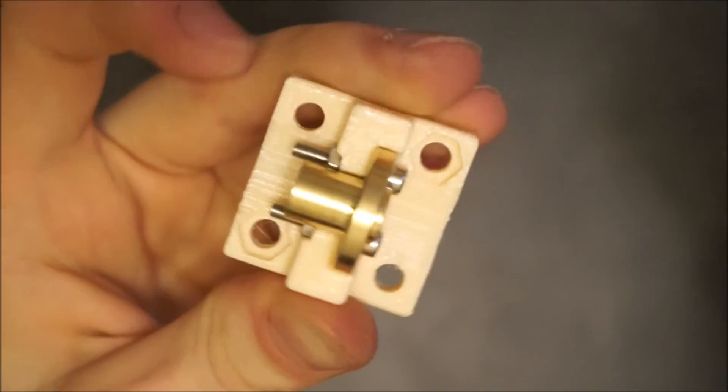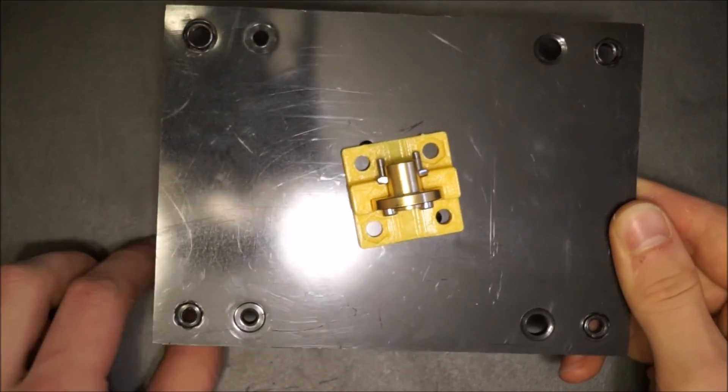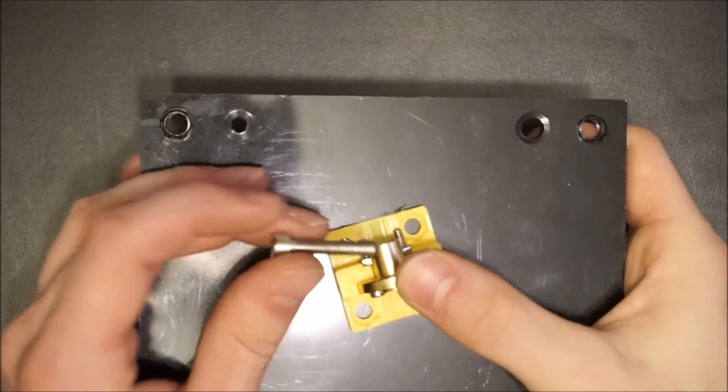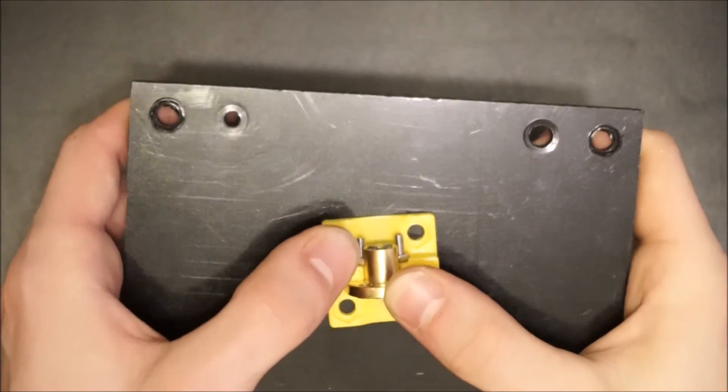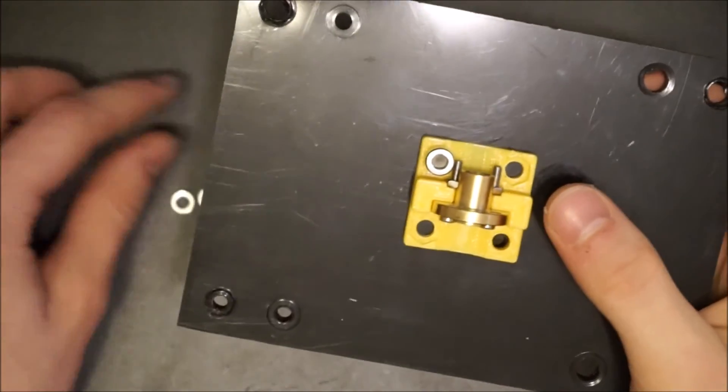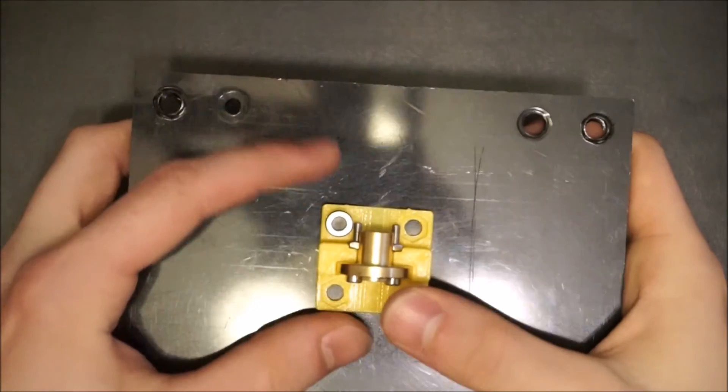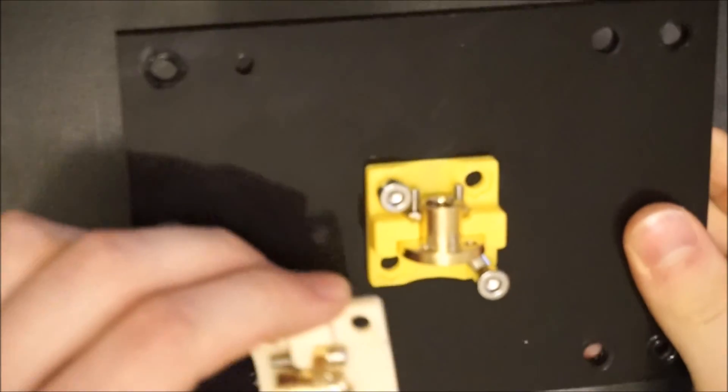Once you've assembled all three nut mounts, you can begin placing them on the XZ gantry. Place the first of the two similar mounts facing upward and align the holes without nut traps to the holes in the gantry. Then press two M5 bolts into place.